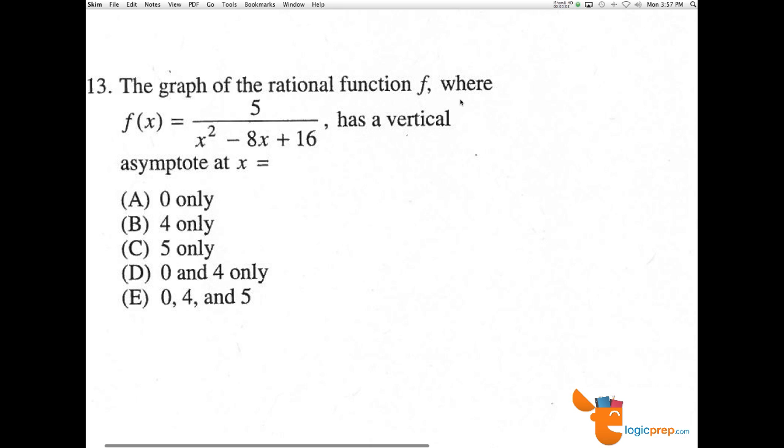Number 13, the graph of the rational function f where f of x equals 5 over x squared minus 8x plus 16 has vertical asymptotes at x equals.